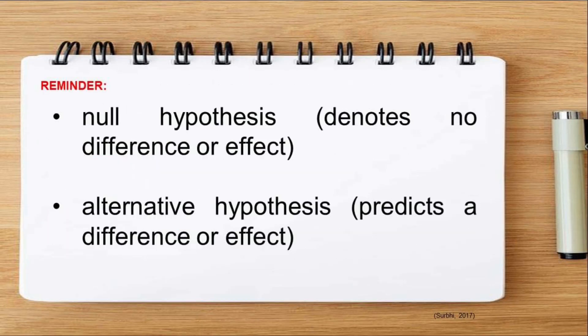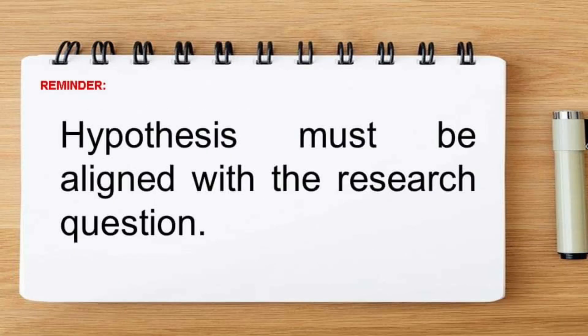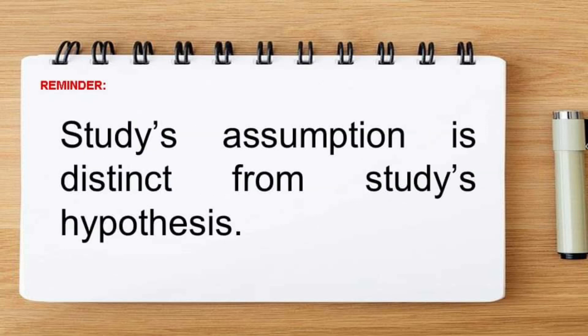Again, the null hypothesis denotes a claim that no difference or effect is expected, while an alternative hypothesis predicts a difference or effect. Your hypothesis must be aligned with your research question. Before wrapping up, it's important to note that the study's assumption is distinct from the study's hypothesis. This will be covered in a later video.